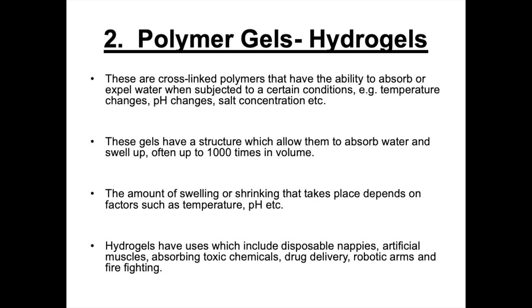Hydrogels have a number of uses and they can be found in disposable nappies. They can be found in artificial muscles. They can be used to absorb toxic chemicals. They can be involved in drug delivery, robotic arms, and firefighting.